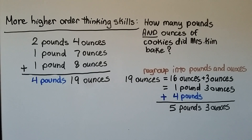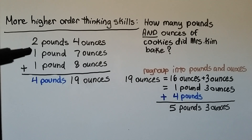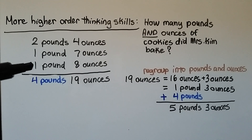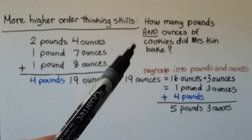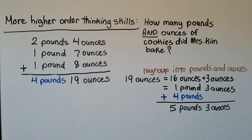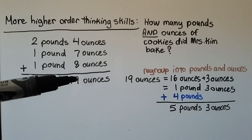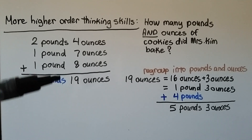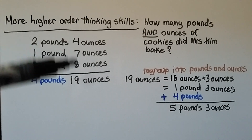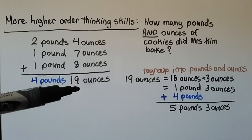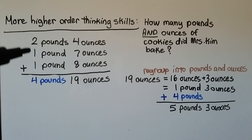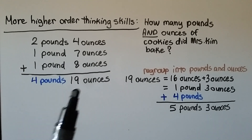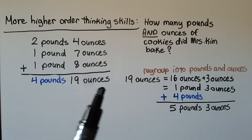Another higher order thinking problem using the same cookies: how many pounds and ounces of cookies did Mrs. Kim bake in all? We add the ounces first: 8 + 7 = 15, plus 4 more = 19 ounces. Then we add the pounds: 2 + 1 + 1 = 4 pounds. So we have 4 pounds and 19 ounces.